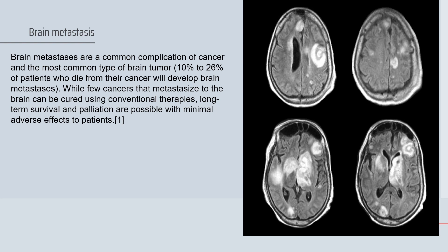Brain metastases are a common complication of cancer and the most common type of brain tumor, occurring in approximately 10 to 26 percent of patients who die from their cancer. This is the most common brain tumor in adults, representing secondary or metastatic disease in patients with a prior diagnosis of a systemic tumor.